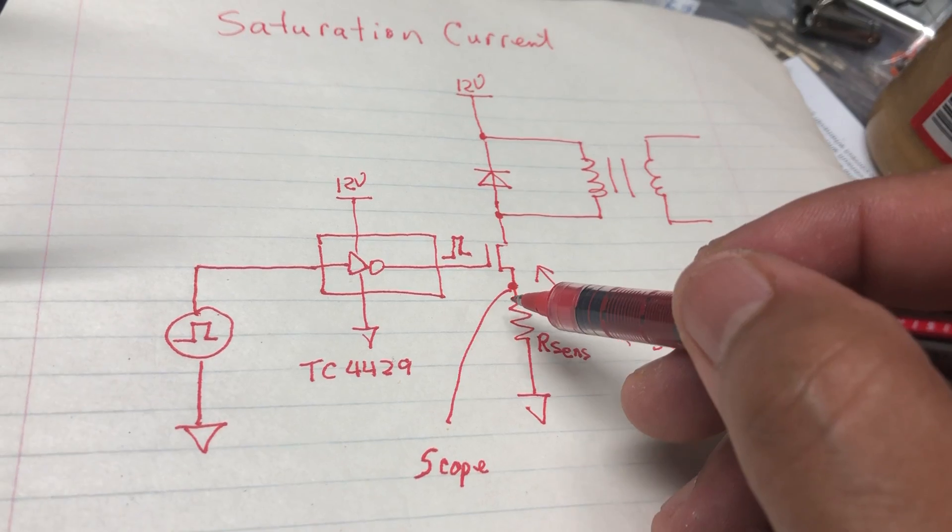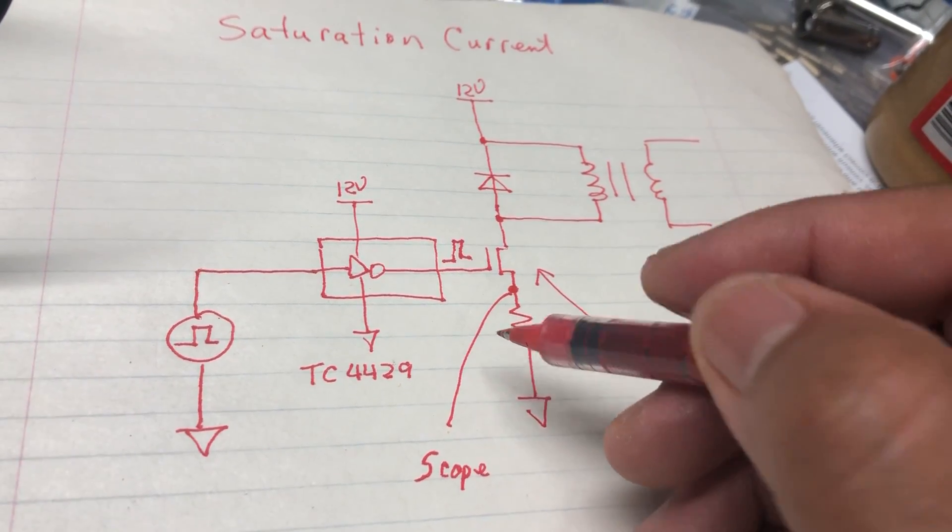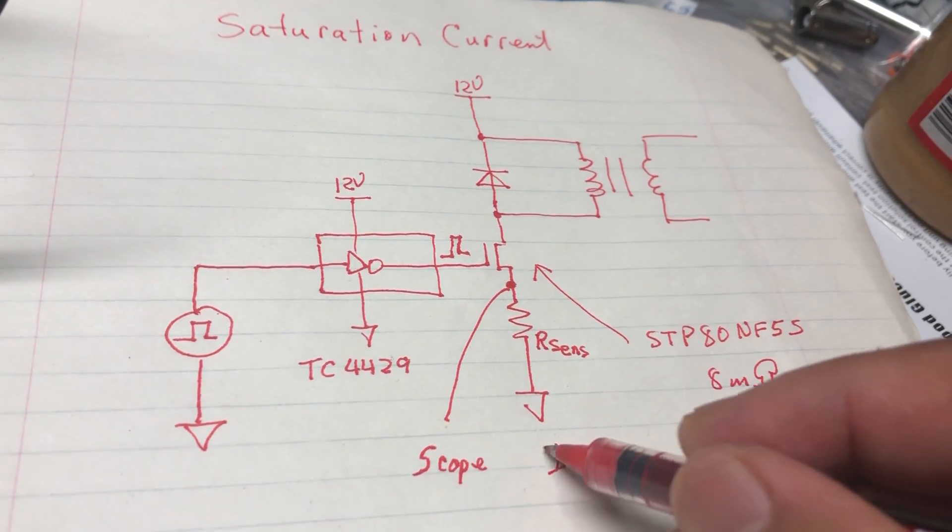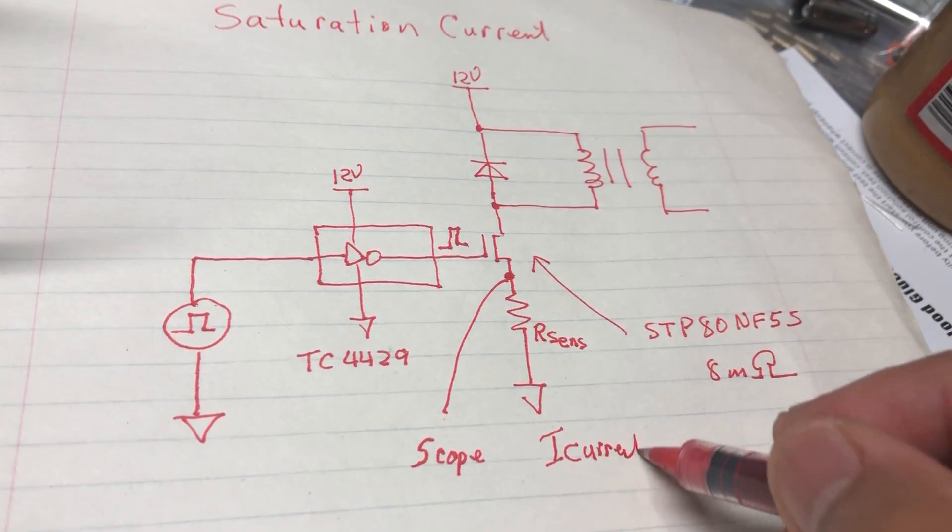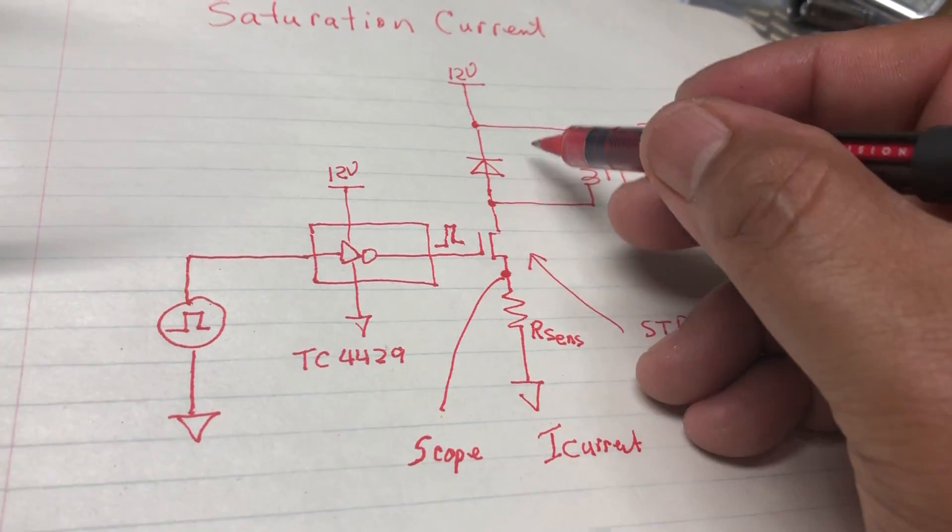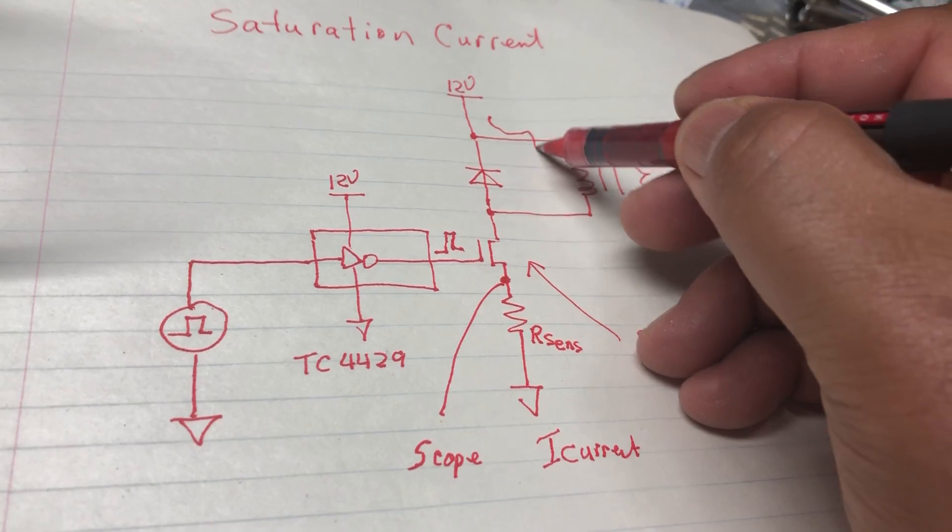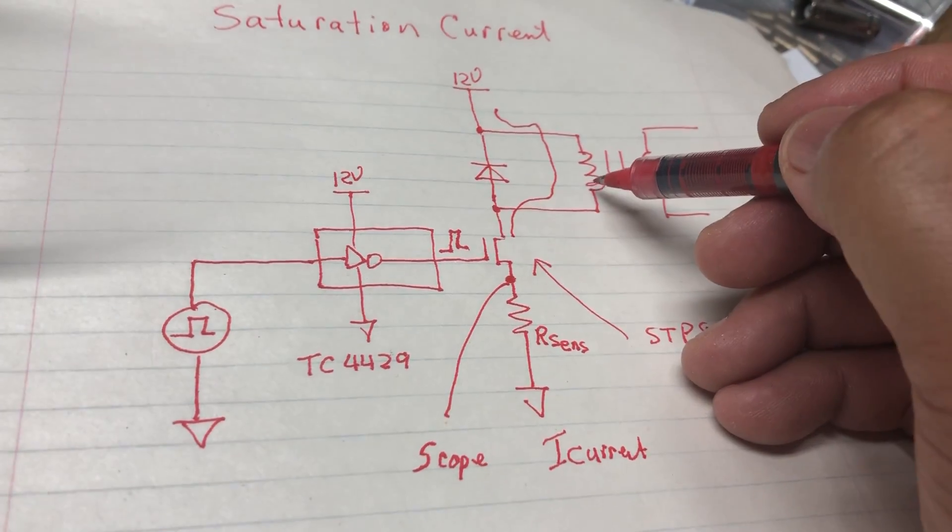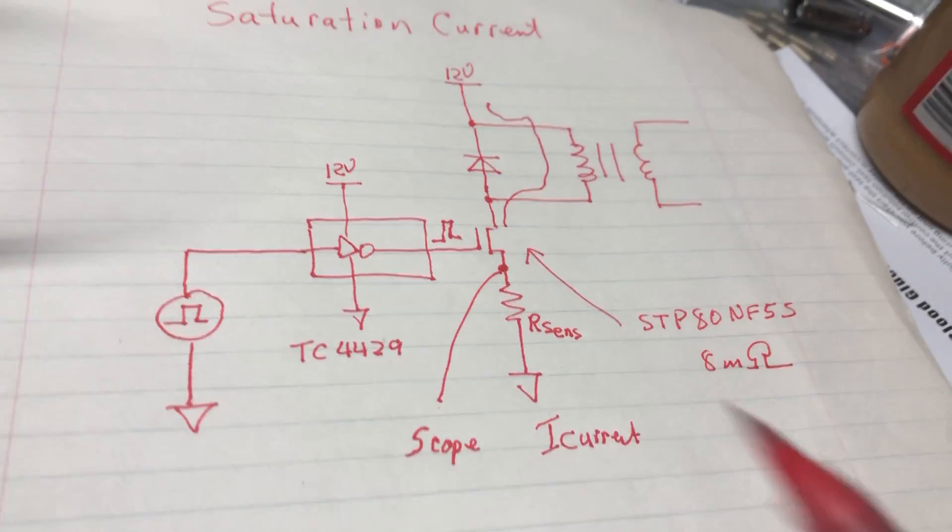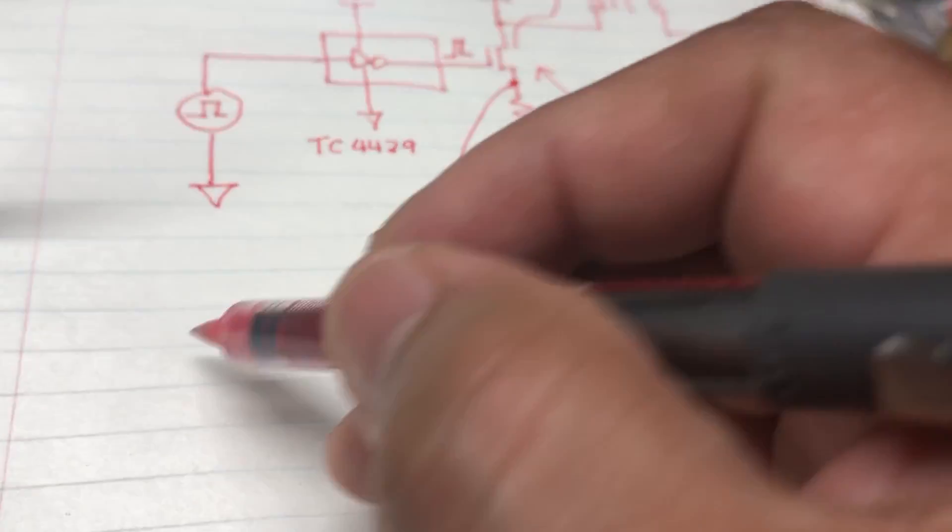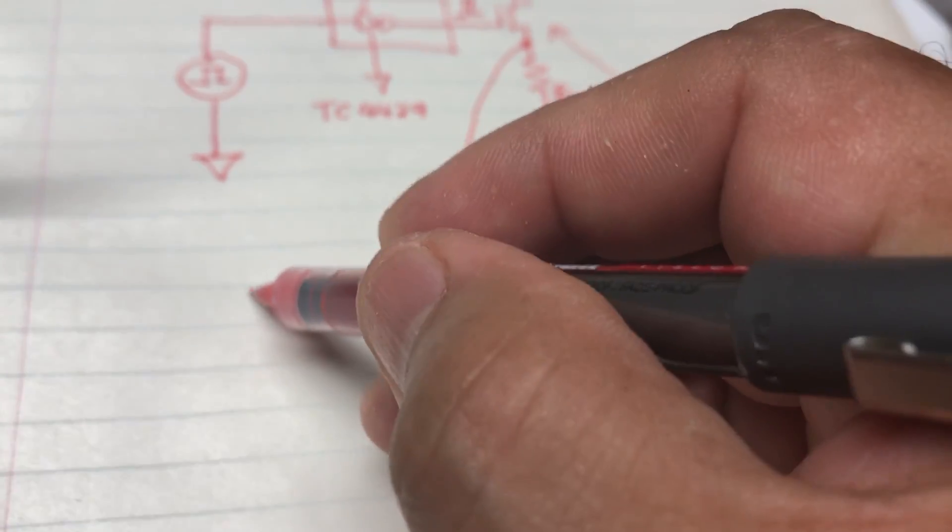The voltage drop across the resistor is a representation of your primary current, and that current is a representation of the current that is flowing through the inductor.